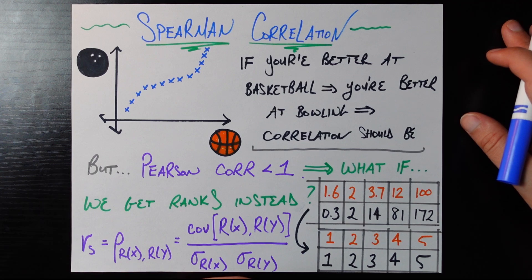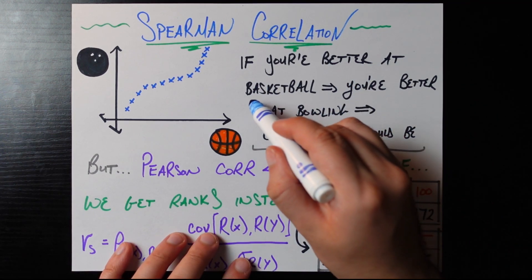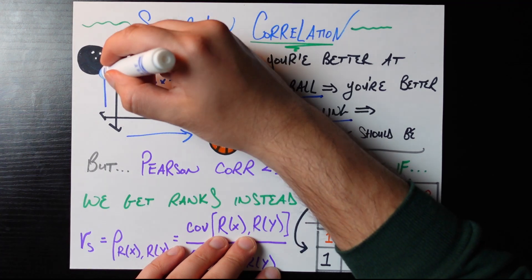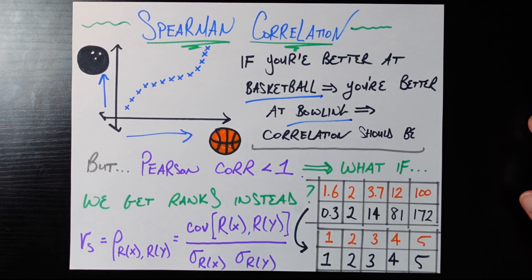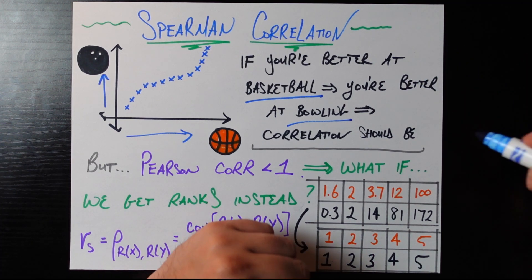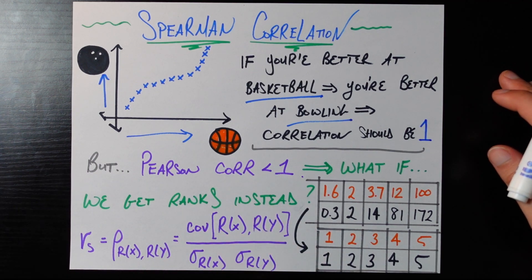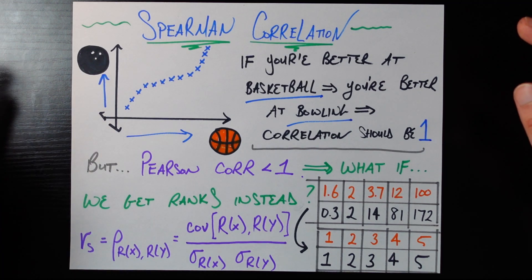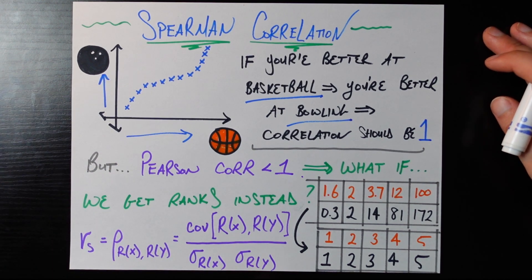Looking at this curve, we can say one fact: if you're better at basketball — further right on the basketball axis — you're better at bowling, meaning further up on the bowling axis. You can take any two people in this diagram and the person who's better at basketball is also better at bowling. So if you think about correlation in the everyday sense, this seems like a perfect correlation — whoever is better at basketball is better at bowling. Shouldn't that be enough for a correlation of one?